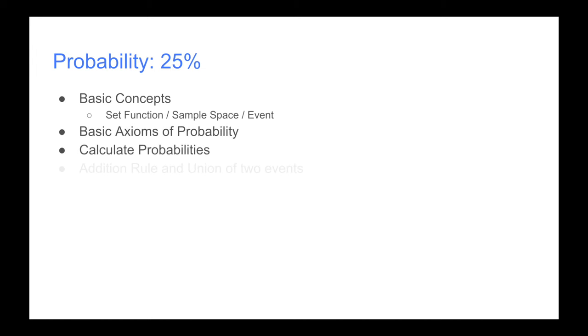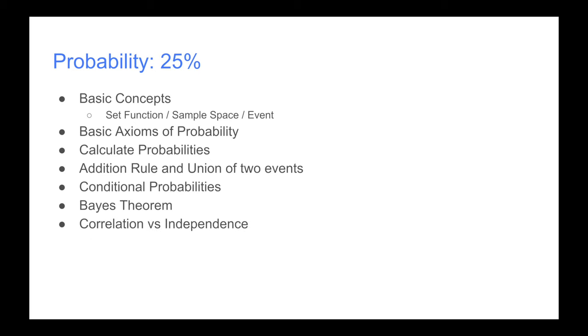But yeah, probability, 25%, and this of course has expanded greatly in mathematical statistics. Some basic concepts: set functions, sample space, and event. The basic axioms of probability. We know how to calculate probabilities, how to use the addition rule and union of two events. Conditional probability, Bayes' theorem, and correlation versus independence.